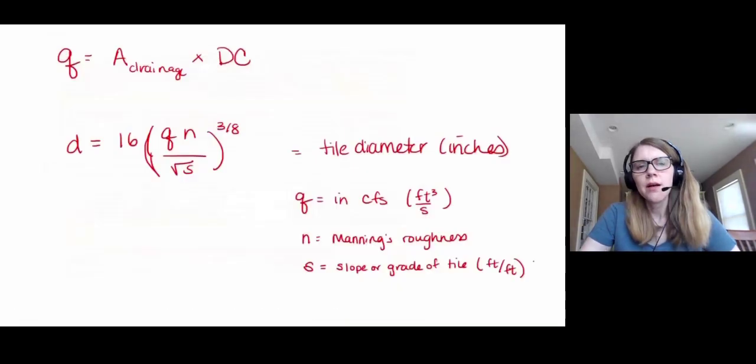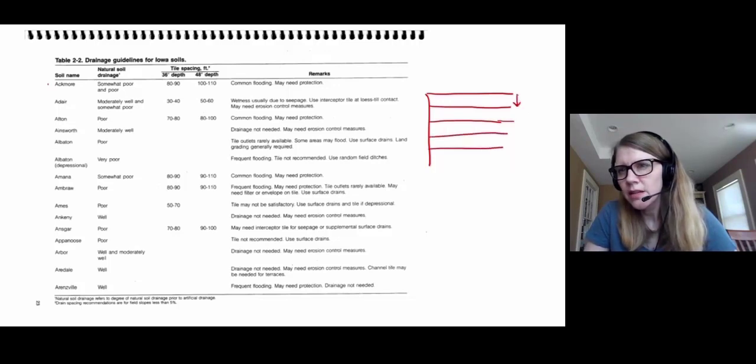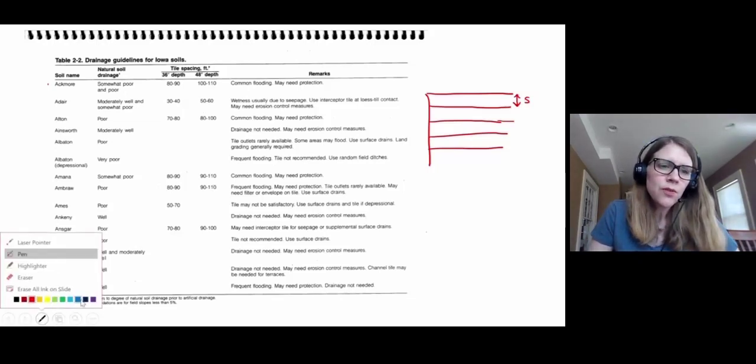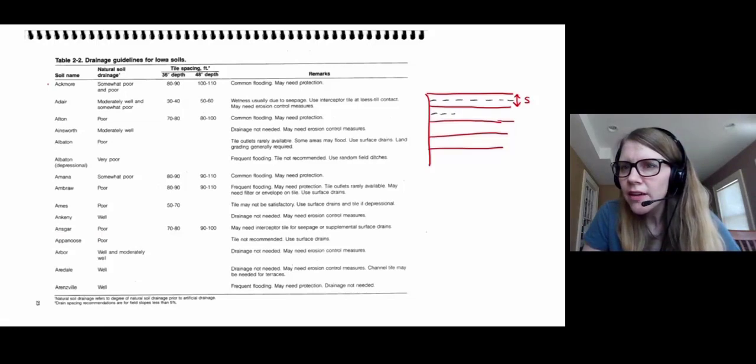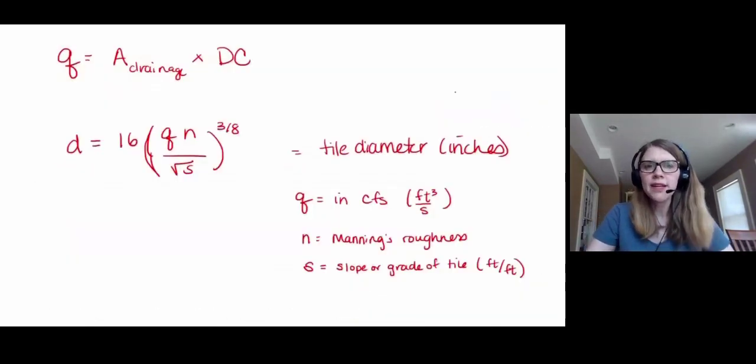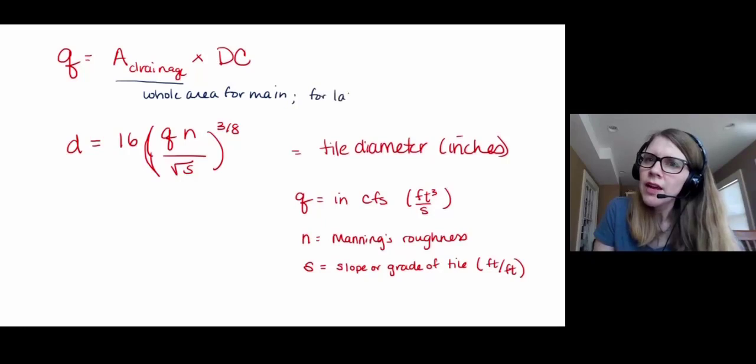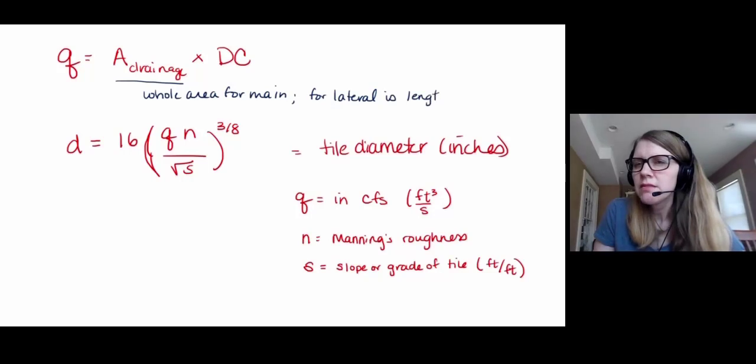N is known as the Manning's roughness value. You can find estimated values of Manning's roughness for different types of tile material. It's unitless. And S in this equation is the slope of the tile, and we want that to be in decimal rather than percent. So if we've selected the spacing, let's imagine. So we've got a system that looks like this. If we wanted to know the drainage area for each one of these laterals, it's like halfway to the next tile on either side. So it's essentially equal to however long those drainage lines are times the spacing. That's each of those laterals is draining that amount. The main line is going to be draining the whole field.